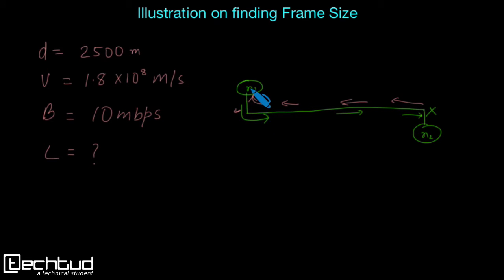So when this jamming signal is coming back, this node is still transferring the part of this frame, right? Then this node will come to know that the frame this node is attempting to transfer has collided somewhere, and collision has occurred, so this frame has to be retransmitted.